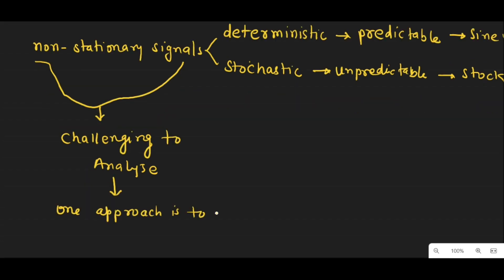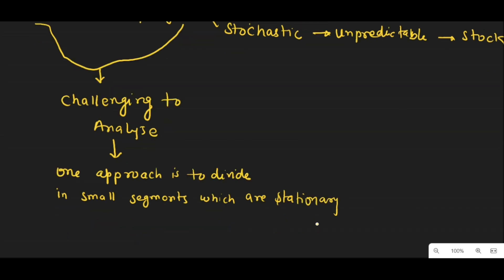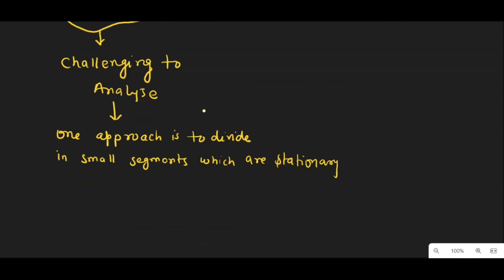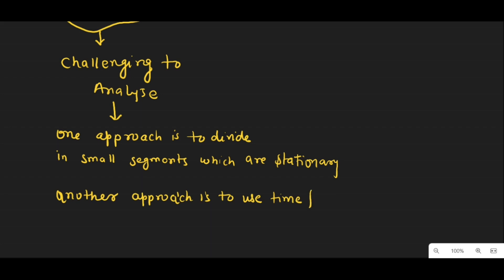One approach to deal with these signals is to segment them into stationary segments, which are then analyzed individually. Another approach is to use time-frequency analysis techniques, such as the Short-Time Fourier Transform, which can provide information about the frequency content of a signal as it changes over time.